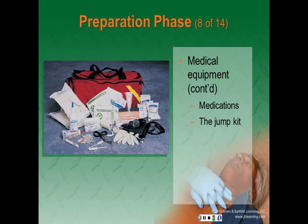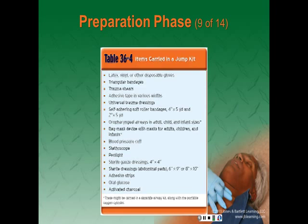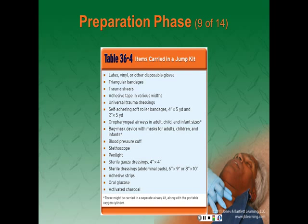Table 36-4 lists many items carried in the jump kit, including disposable gloves, triangular bandages, trauma shears, adhesive tape, universal trauma dressings, self-adhering soft roller bandages, oral airways, bag-mask device, blood pressure cuff and stethoscope, penlight, sterile gauze dressings, sterile dressings in 4x4, 6x9, or 8x10 sizes, adhesive strips, oral glucose, and activated charcoal.